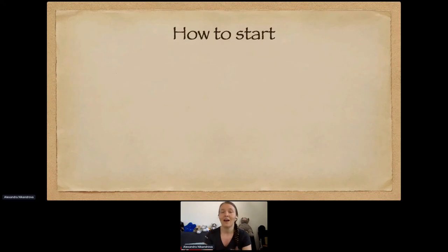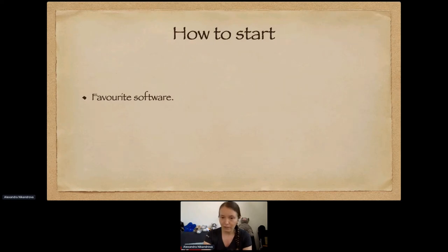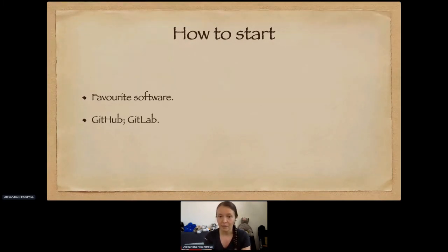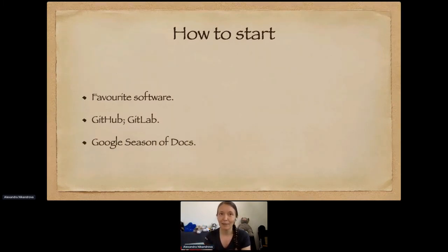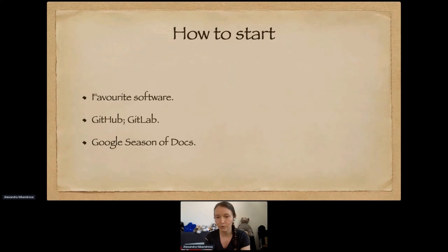Main question: where to start? A very simple way is to start with familiar software you're already using. If you struggle now and then with something, it's a good sign that the software is lacking documentation. You can find a project on GitHub or GitLab, where the majority of open source projects are hosted — popular platforms that store code and allow collaboration. A third option is to participate in events like Google Season of Docs, where Google supports open source organizations by inviting technical writers from all over the world to contribute new or improve existing documentation.